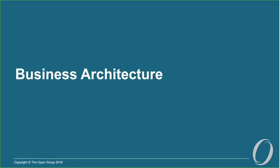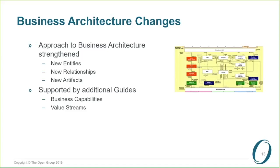So in version 9.2, the business architecture is significantly enhanced. The approach has been strengthened with new entities — new things that we're going to architect — new relationships, new artifacts, in other words new models, and new diagrams that we recommend people should consider. Importantly, there is a stream of new guide documents which build on the summary information in the standard and introduce a lot more detail. So far we've got business capabilities and value streams, and we've got one on business models very close to deployment now.